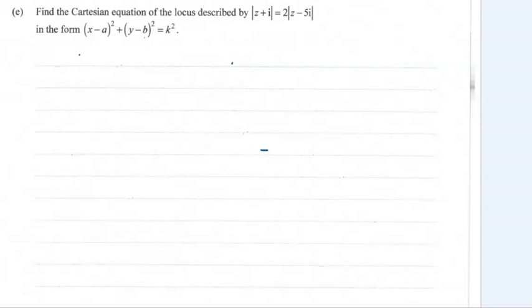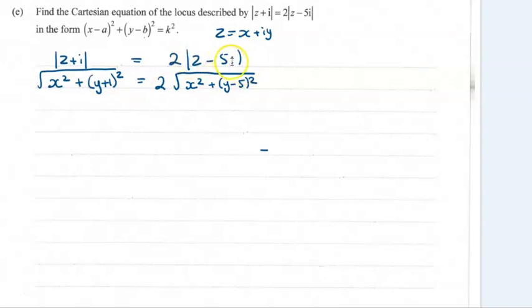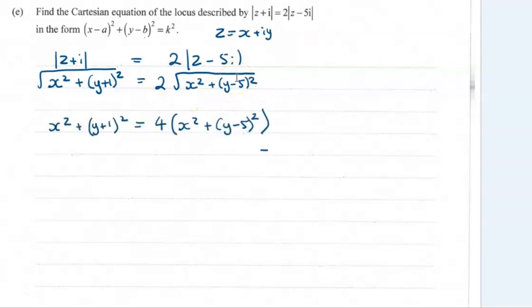This excellence question is not so bad — it's just got quite a few algebra steps. Start by writing z as x plus iy. Popping that into the equation, the modulus of z plus i means we take z and add on i, so it'll be x plus iy plus i. Modulus means we take the real part squared, imaginary part squared, and square root. The imaginary part is y plus 1. On the right hand side, modulus of z minus 5i gives an imaginary part of y minus 5.